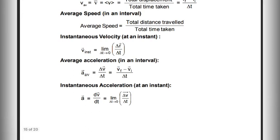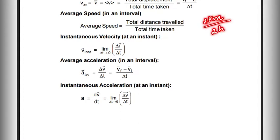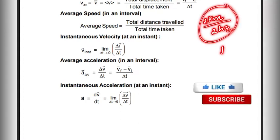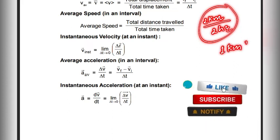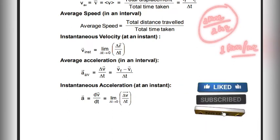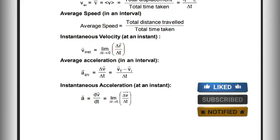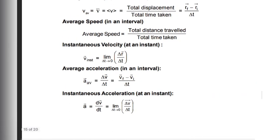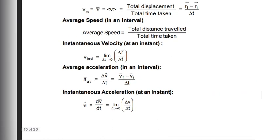Then if we talk about average speed, in average speed you just write total distance — not displacement. For example, if you travel 2 km in 2 hours, then the speed is 1 km/h. But this is different from average velocity, because average velocity uses total displacement, which is the shortest distance.